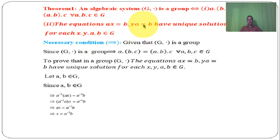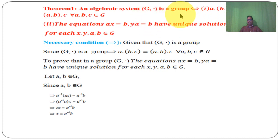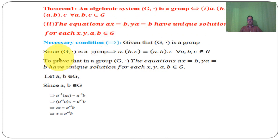Here, the necessary and sufficient conditions: G dot is a group if and only if these conditions hold. Given that G dot is a group, by definition of a group, the associative law holds. Therefore, A dot (B dot C) is equal to (A dot B) dot C for each A, B, C belongs to G.